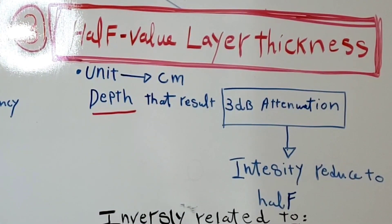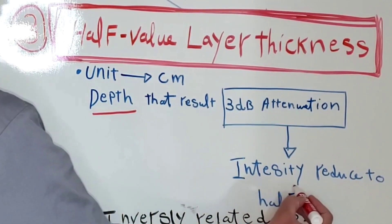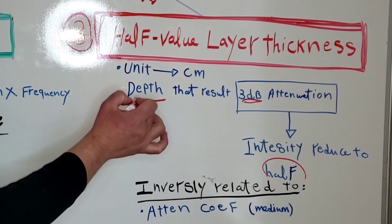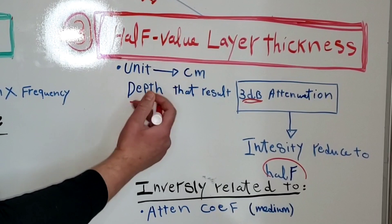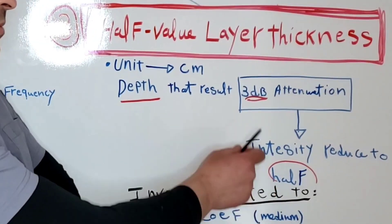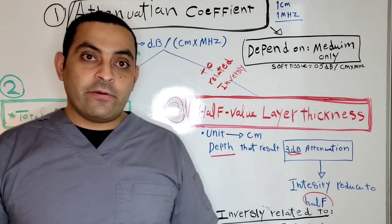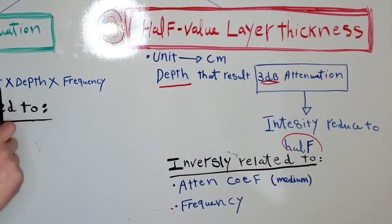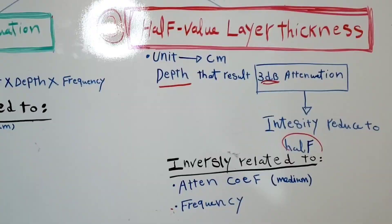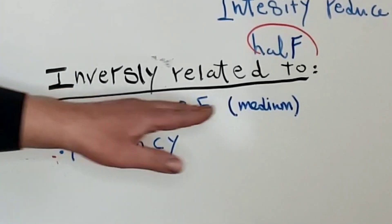Now let's talk about half value layer thickness. Half value layer thickness is the distance or depth that results in reducing the intensity to half of the original value. Because it measures depth, we use distance units such as centimeters or millimeters. Reducing intensity to half corresponds to 3 decibels of attenuation. Half value layer thickness depends on two factors: the attenuation coefficient and the frequency — and since the attenuation coefficient depends only on the medium, half value layer thickness also depends on the medium.